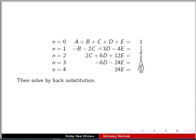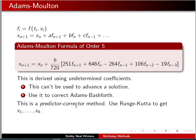So, this gives us this system of equations, down through here, and then we solve that by back substitution. That yields the numbers we get in our Adams-Bashforth formula.